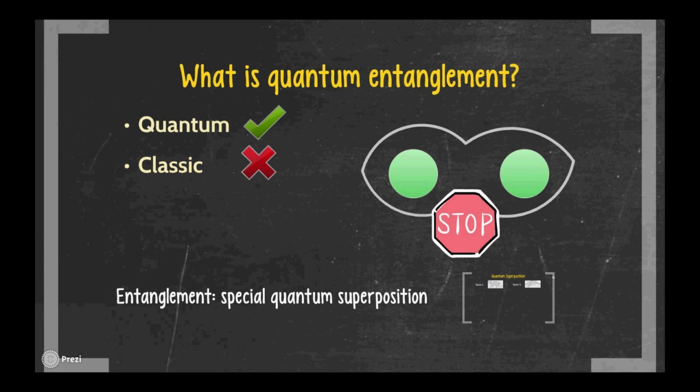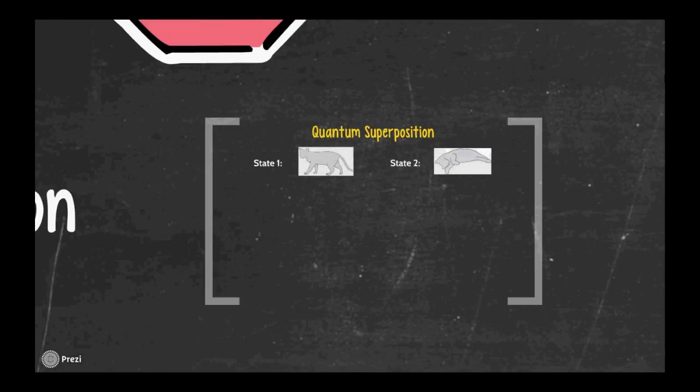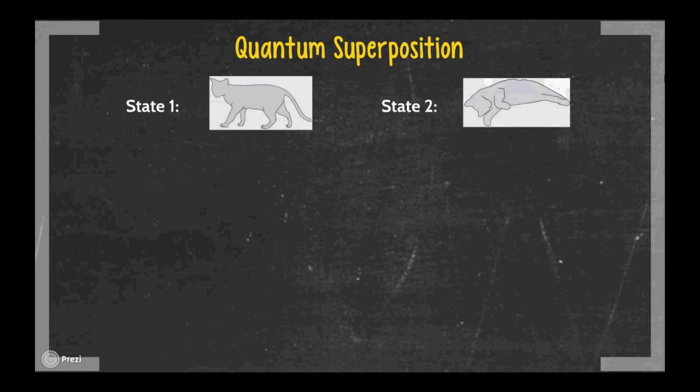But now, what is this superposition? In quantum mechanics, the total state of a system can be a combination of some of its possible states, being the system in all of those states at the same time.